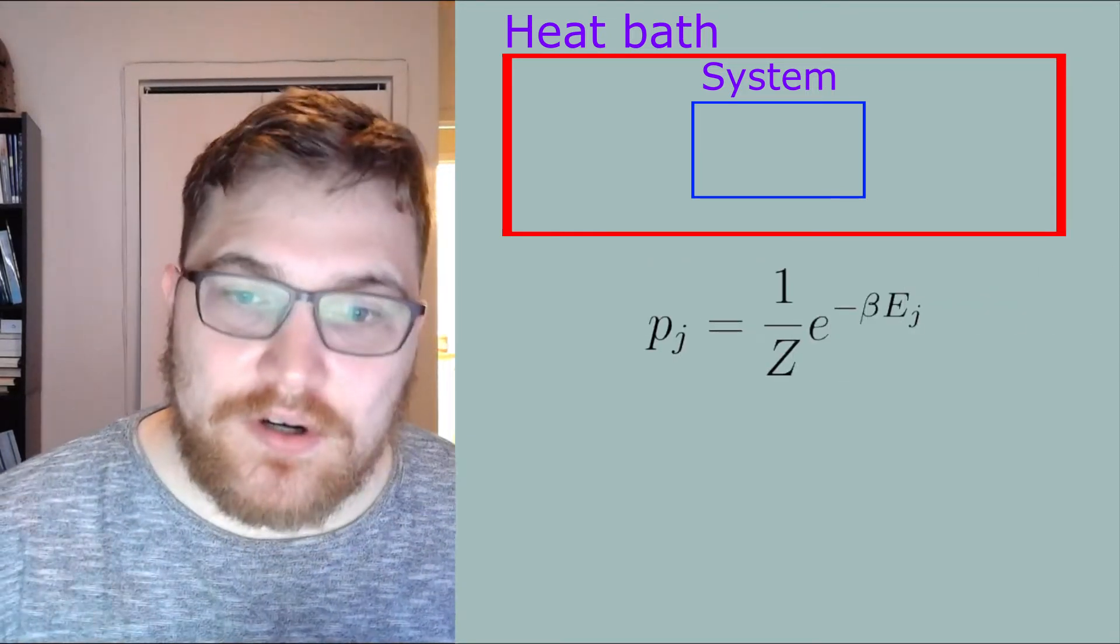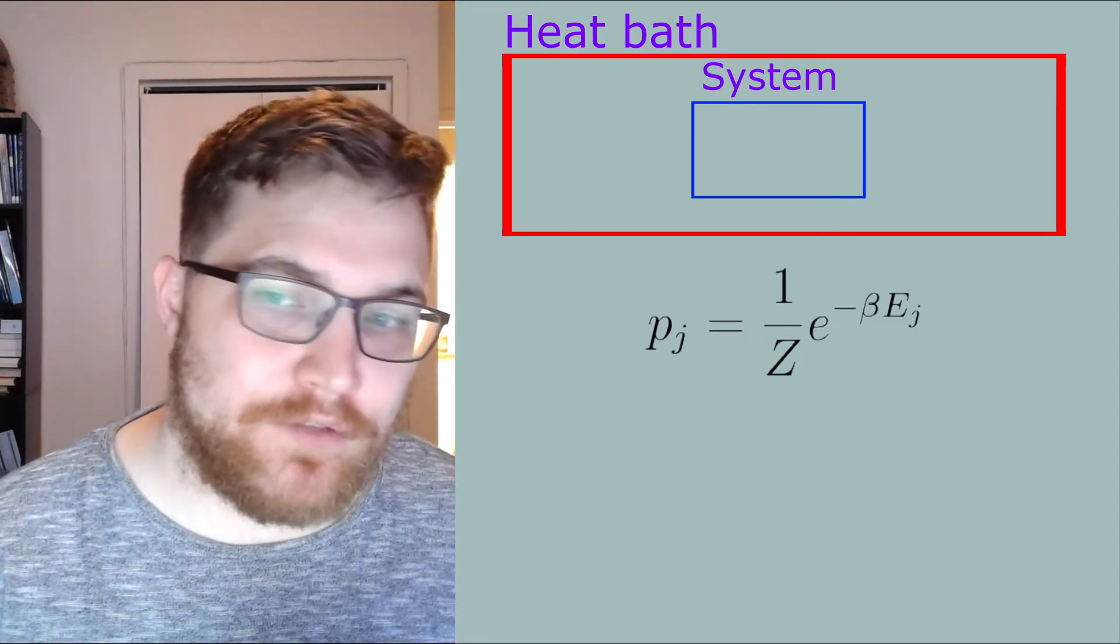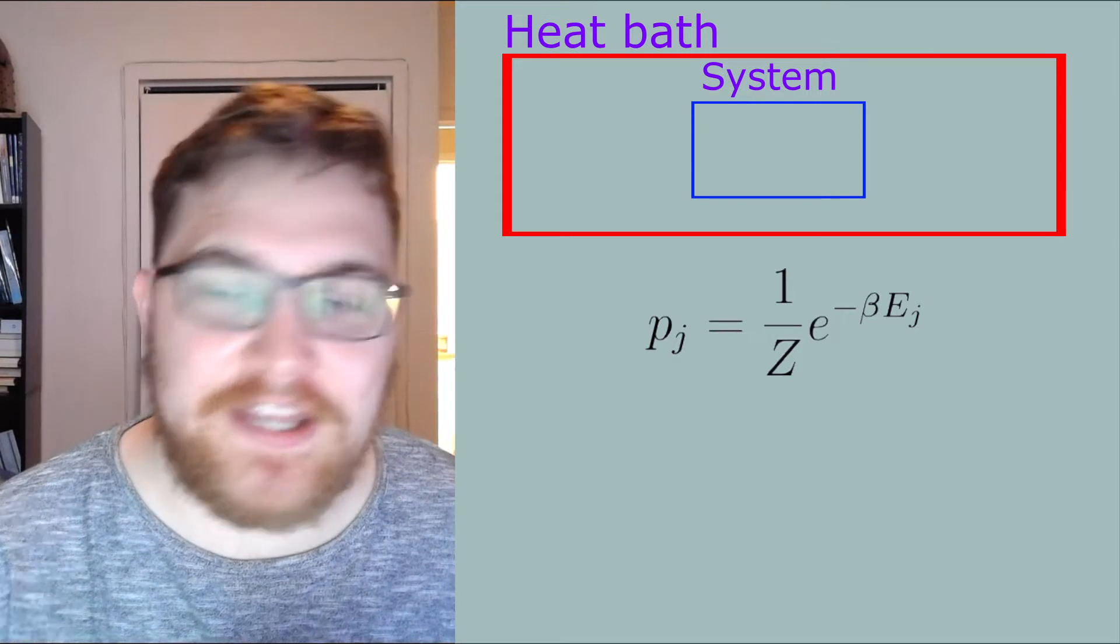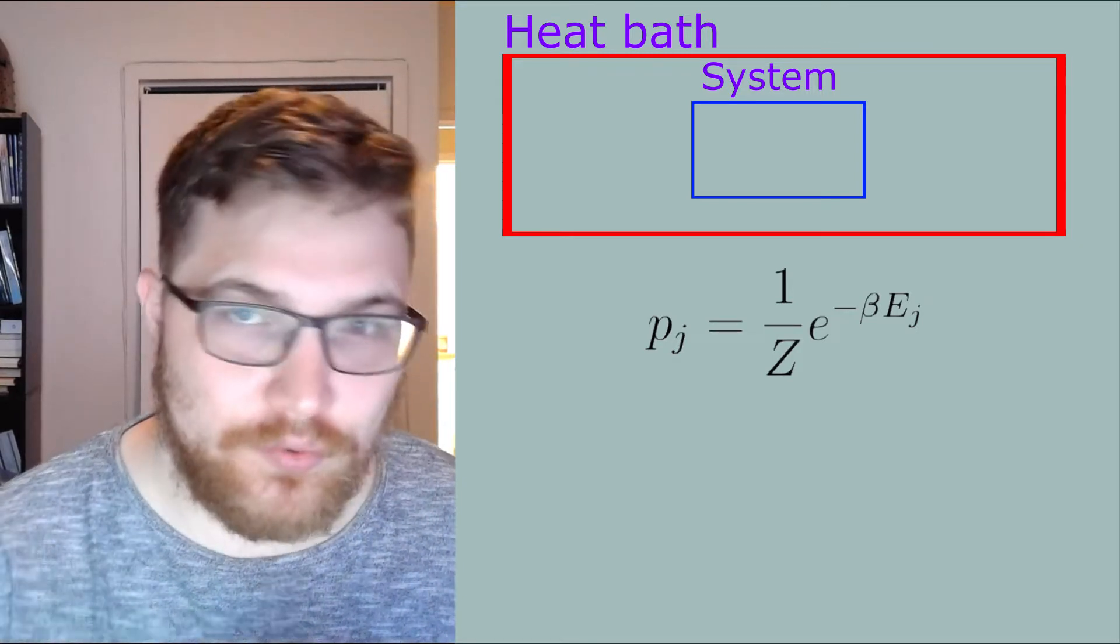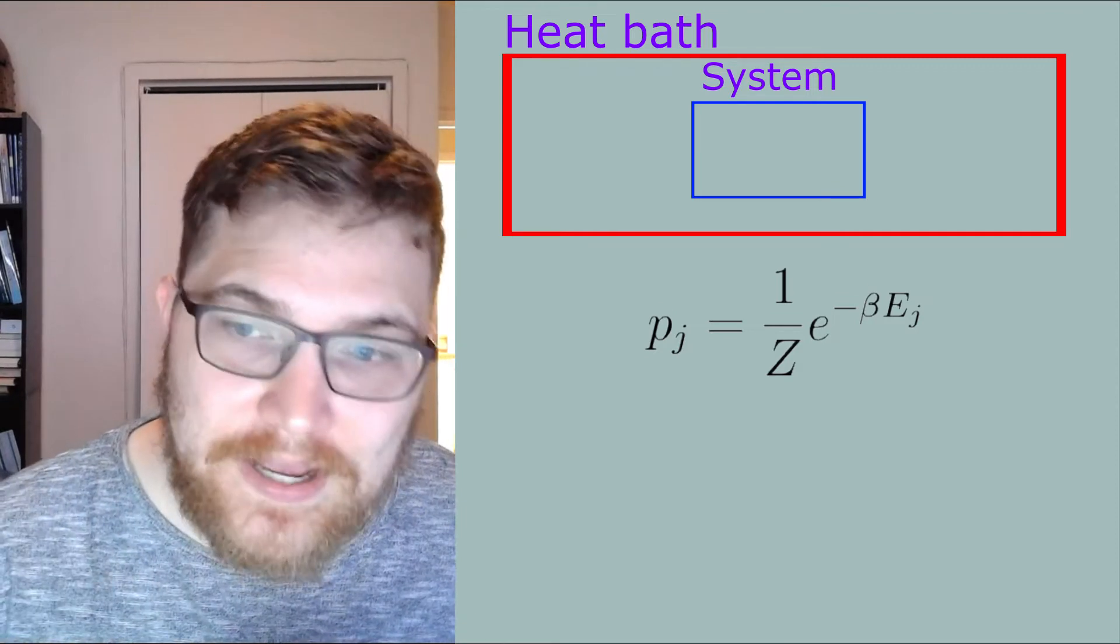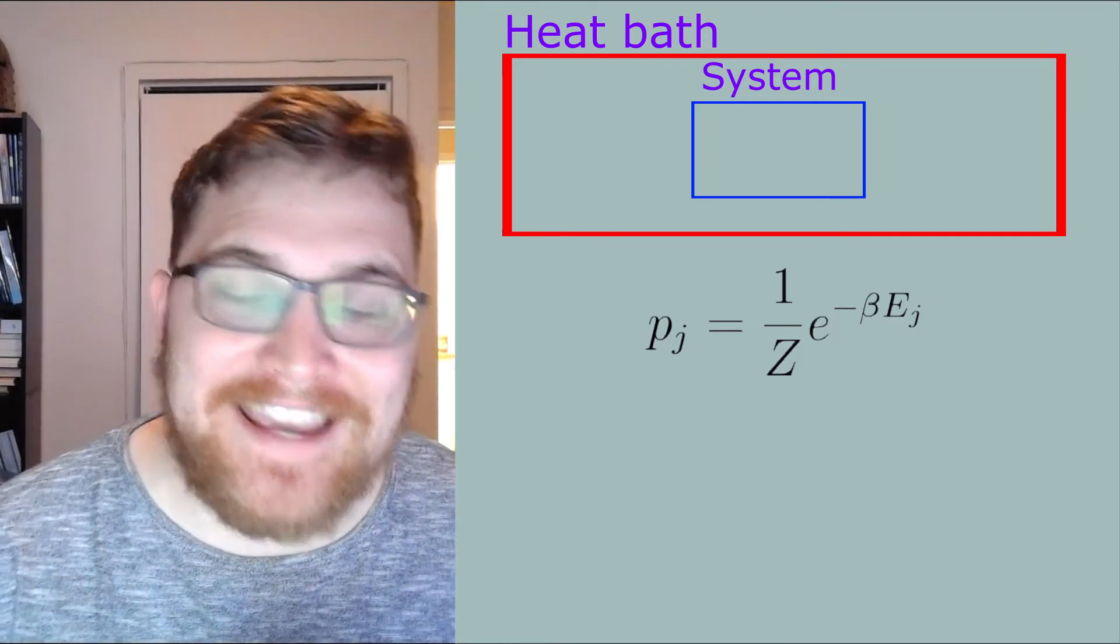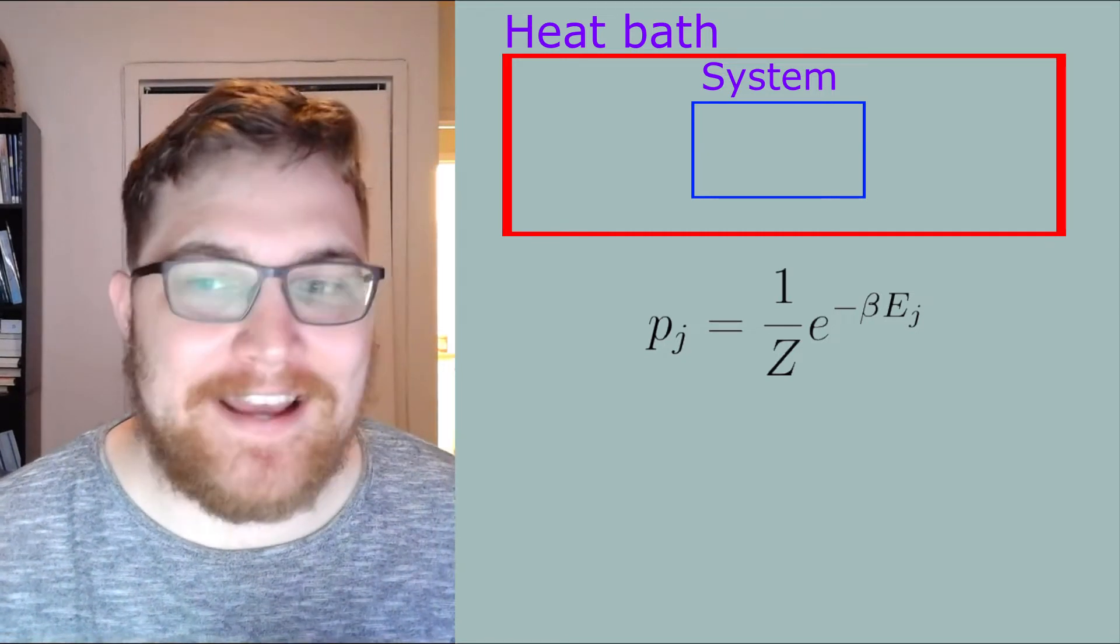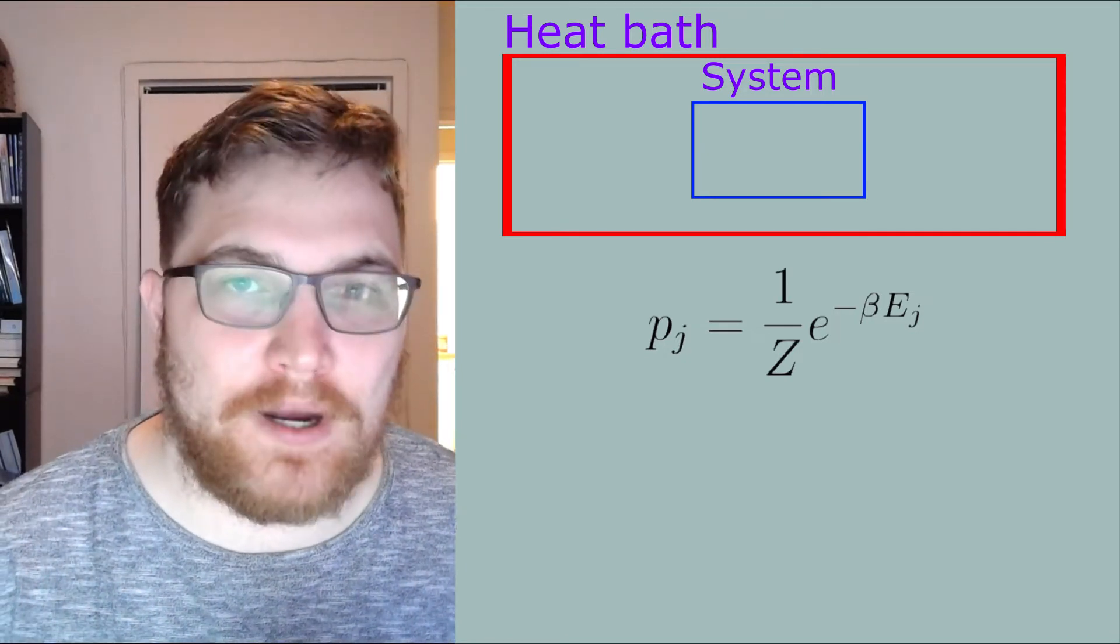In this context we use the canonical ensemble where we give probabilistic weights to the microstates in the following way. Z here is called the partition function and as we have seen in the past, it is really the key thing that we want to compute to complete problems in statistical mechanics.